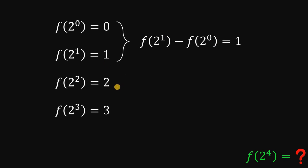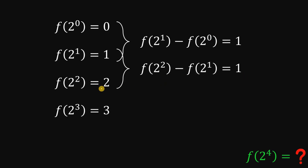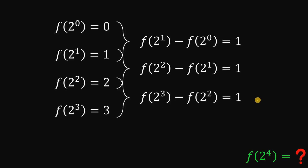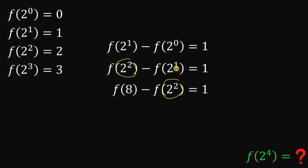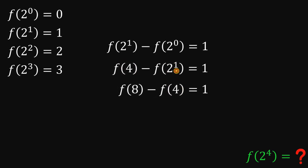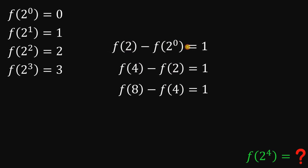If we subtract the second equation from the third, we get also 1. And the same thing, if we subtract the third equation from the fourth, we get also 1. Now, 2 cubed is simply equal to 8, 2 squared is just 4, 2 raised to 1 is just 2, and 2 raised to 0 is simply equal to 1.